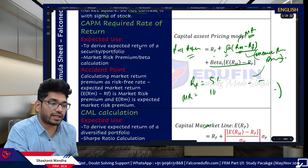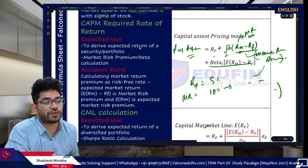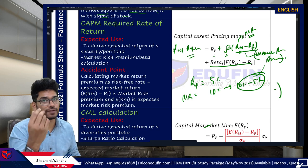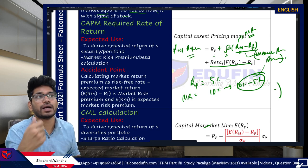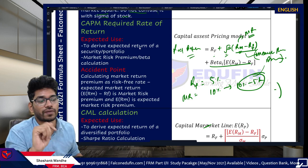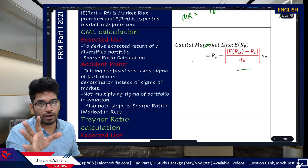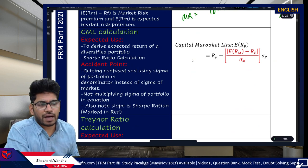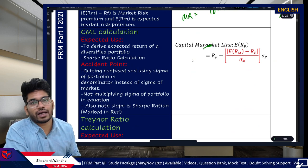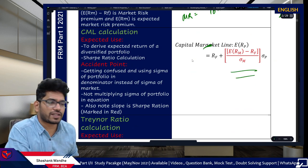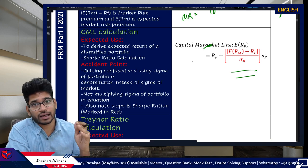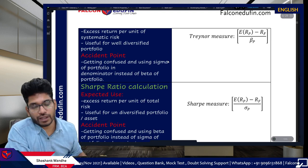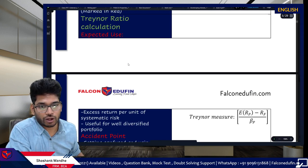If GARP provides the market return as 10% and RF as 5%, then you calculate 10% minus 5% yourself. Remember: RM minus RF is market risk premium; RM is market return. Use the right input based on what information is given. The capital market line is next — the slope of the capital market line is the Sharpe ratio.